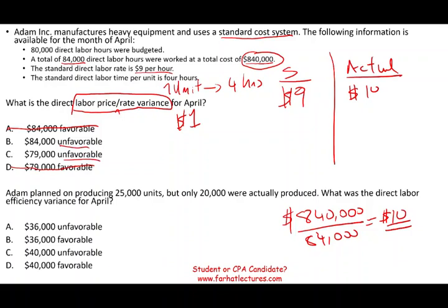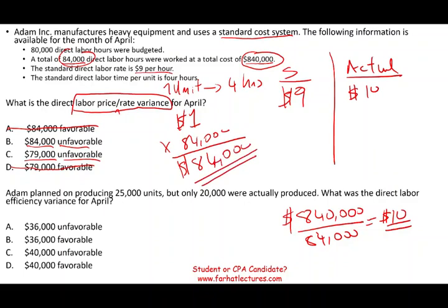We know it's unfavorable, so now it's 50/50 between the two unfavorable answer choices. They actually worked 84,000 hours, so the unfavorable price variance for labor is 84,000 hours × $1 = $84,000 unfavorable. From a price perspective, they paid $84,000 more to do the job because they paid $1 extra per hour more than their standard cost.